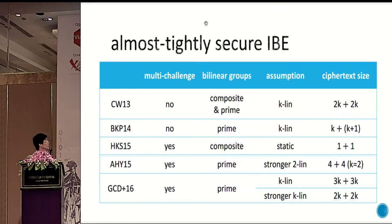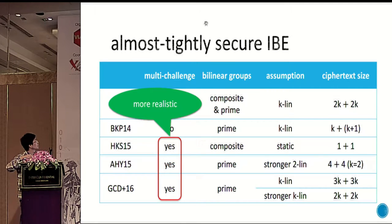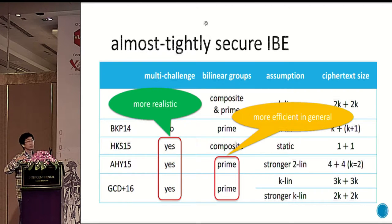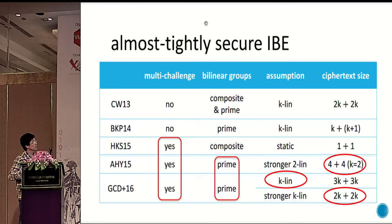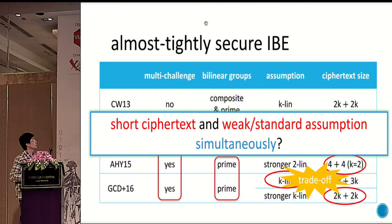Regarding our motivation: currently we have several schemes. The first two are in the single-challenge model and there are four in the multi-challenge model. We focus on these four, and the last three are constructed using the more efficient prime-order bilinear group. But the scheme based on the standard assumption is not quite efficient, while the two efficient ones require a somewhat stronger assumption. So there seems to be a trade-off. We ask: can we find a scheme with short ciphertext under the standard assumption?